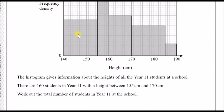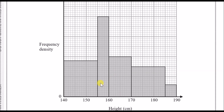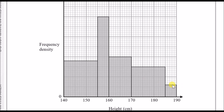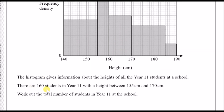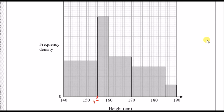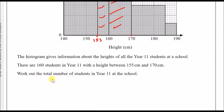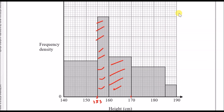Question 19. A histogram gives information about the heights of all year 11 students at school. The x-axis shows height from 140 to 190, and the y-axis shows frequency density — the area of each block equals the frequency. We're told there are 160 students with a height between 155 and 170. So the total area of those two blocks equals 160.